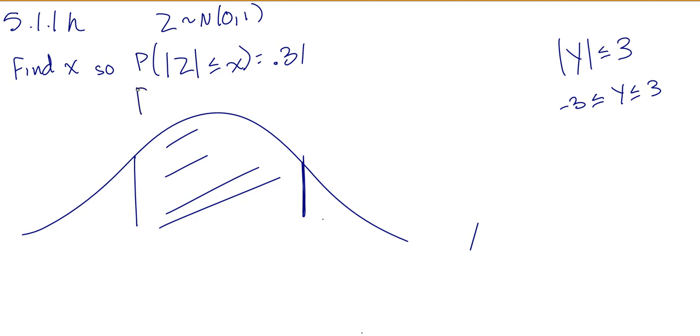Or if you prefer, you could do negative X is less than or equal to Z is less than or equal to X equals 0.31. So that means here's the X, this is the negative value of X, and we're looking for the area in between is 0.31.